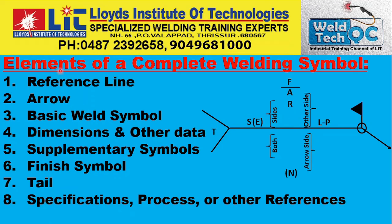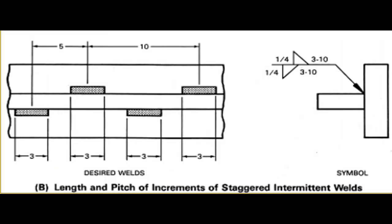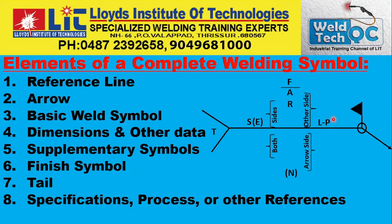The next element is dimensions and other data. After showing the weld symbol, you can give dimensions here. On the left-hand side of the weld symbol it will always be the weld size and groove size. On the right-hand side it will be length and pitch. If nothing is shown, that means the entire area is to be welded. If a length and pitch are mentioned, then welding is to be done accordingly.